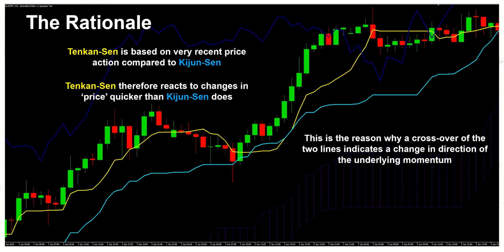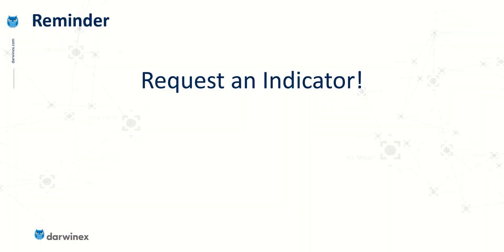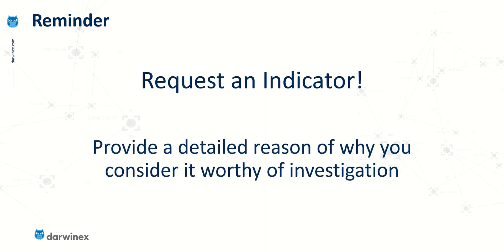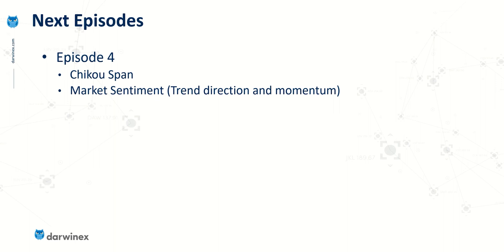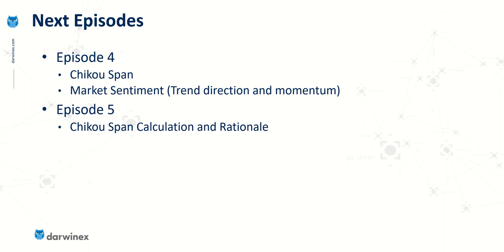More details on that in a moment. But for now, just a reminder to please do request an indicator if you believe there's good reason to consider it worthy of investigation. I'll be considering all requests put forward and deciding which might present the best opportunities for identifying trading edges. In the next episode — episode four — I'm going to move on to one of the other lines in the Ichimoku indicator called the Chiku Span. This measures market sentiment by looking at the trend, direction, and underlying momentum. Then, just like we did with Tenkan-sen and Kijun-sen, I'll look at the calculation and the rationale behind it.